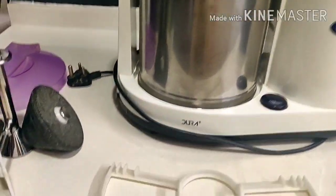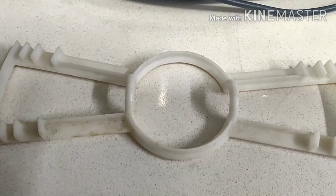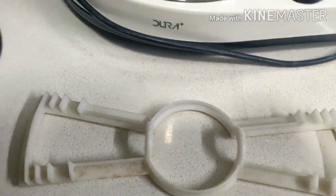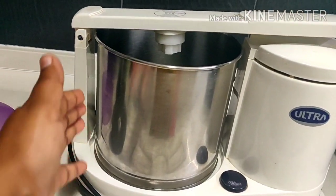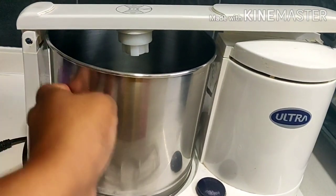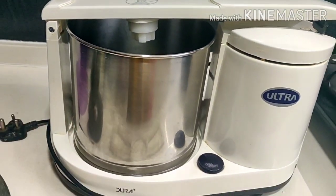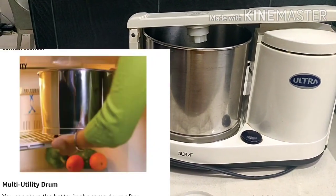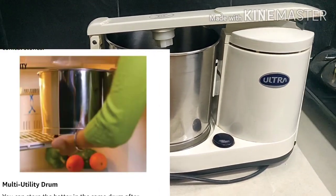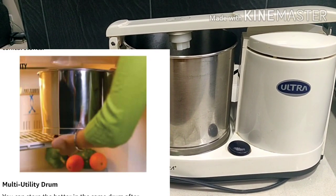It also comes with batter cleaner for easier cleaning of the conical stones. It has a shaped multi-utility drum. The batter can be stored in the same drum after grinding. It has an 85 watt motor and power consumption is 150 watts.